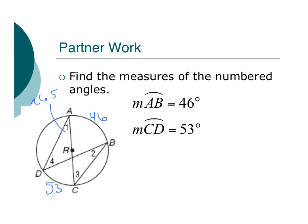Angle 2 also intersects Arc CD. Angle 2 is half of 53, which is also 26.5. And now we have 46 for AB and angle 4 and also angle 3 intersect the same arc here, which is 46. So they're both half of that, which is 23.